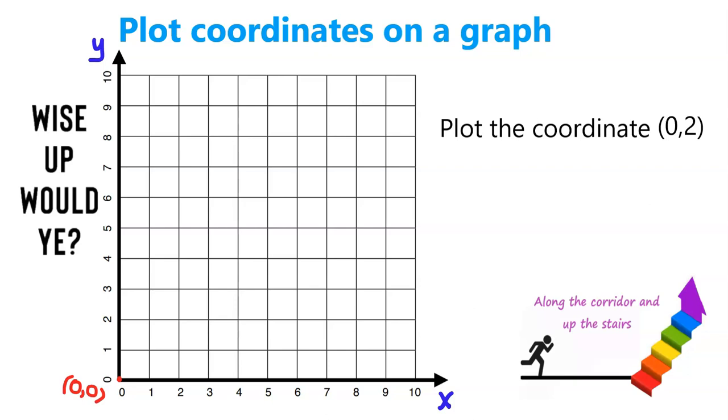Plot the coordinate (0, 2). Each coordinate has two parts: it's got an x part and a y part. The way I remember which order these are is simply x comes before y in the alphabet: x, y, z. So x comes first.